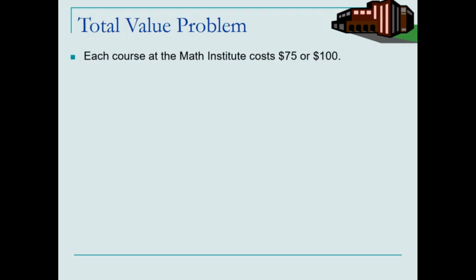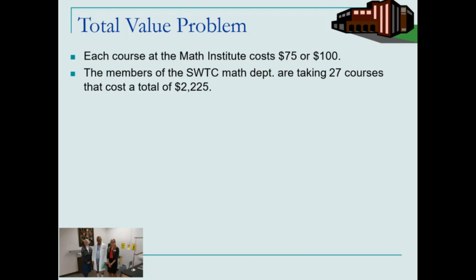Each course at the math institute costs $75 or $100. The members of the Southwest Tech math department are taking 27 courses that cost a total of $2,225. How many $75 courses and $100 courses are being taken?